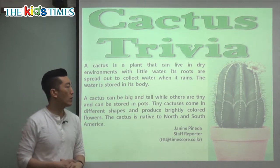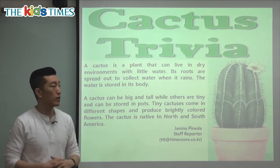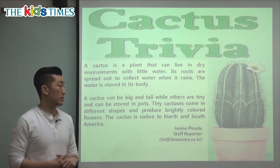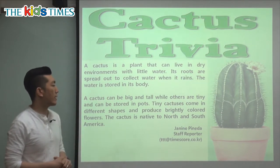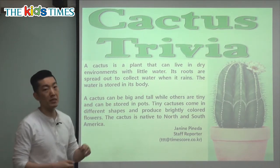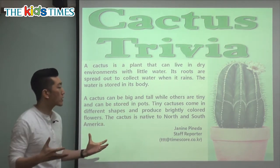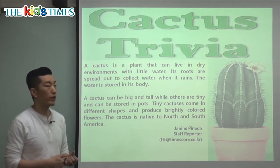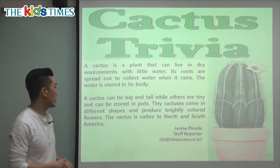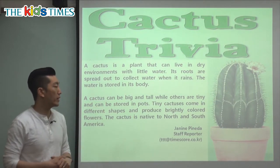A cactus can be big and tall, while others are tiny and can be stored in pots. Sometimes we have small cactuses you can keep at home, but in the wild you can see even larger cactuses, taller than a person. Tiny cactuses come in different shapes and produce brightly colored flowers — some round, some skinny, but they can all make brightly colored flowers.